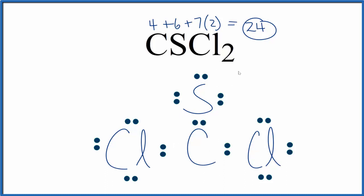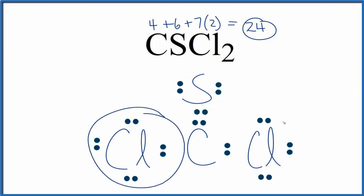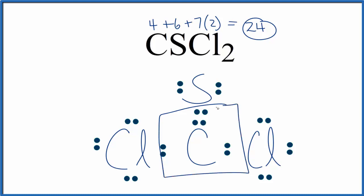Let's try sharing a pair of electrons from the sulfur — that's usually the one that works. So we're still only using the 24 valence electrons, but now the sulfur has 8, each chlorine has 8, and the carbon in the center has 8 valence electrons as well. So this is a Lewis structure for CSCl2.